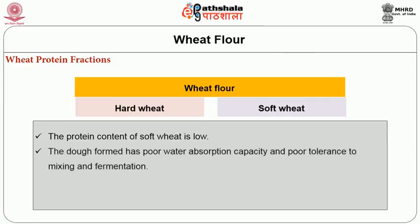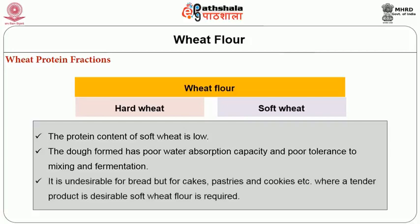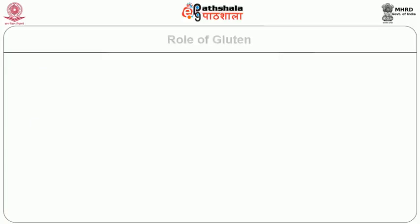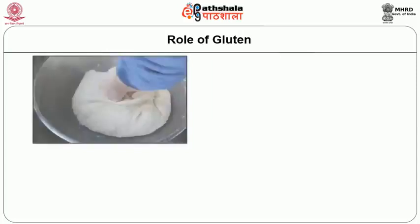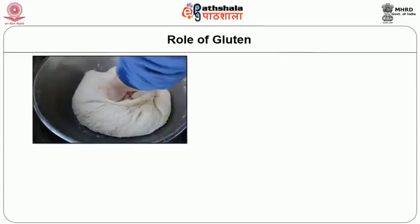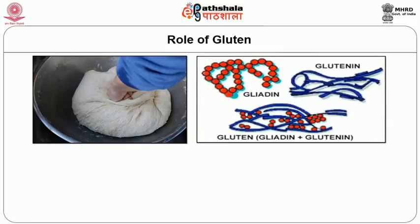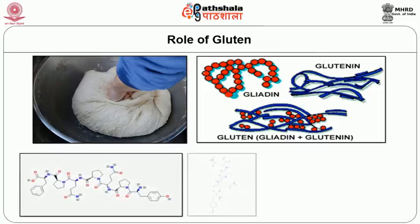Although soft wheat flour is undesirable for bread, for cakes, pastries, and cookies where a tender product is desirable, soft wheat flour is required. When wheat flour is mixed with water to form dough, the protein fractions glutenin and gliadin interact with each other and form gluten, which has the characteristics of both stretchability and elasticity. For proper gluten development, glutenin and gliadin should be in a ratio of 1 to 1 in the flour.